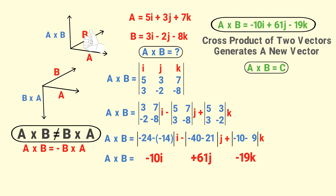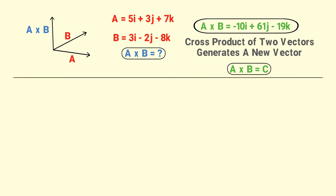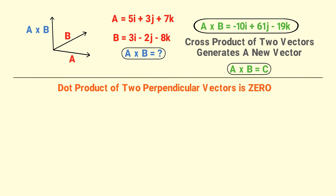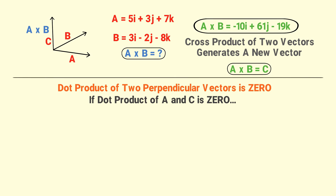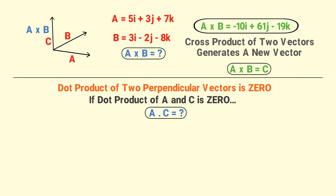Now let me teach you how to check your result. We calculated that the cross product of A and B equals minus 10i plus 61j minus 19k. To verify this, you must know that if two vectors are perpendicular, their dot product equals zero. Since vector C is perpendicular to both A and B, if the dot product of C and A is zero, then our calculation of A cross B is 100% correct.